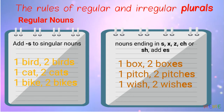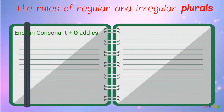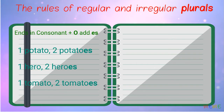For some words ending in -o, add -es. One potato, two potatoes. One hero, two heroes. One tomato, two tomatoes.